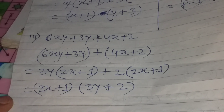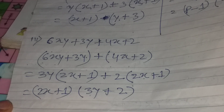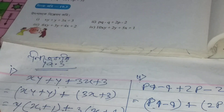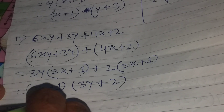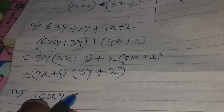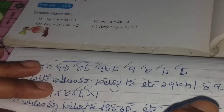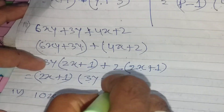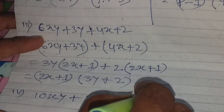Is that correct? Good, that is number 3 done. Now the next problem — let's see the next one. The next problem says: 10x plus 2y plus 5x plus 1. Let's group: 10xy plus 2y, then plus 5x plus 1.